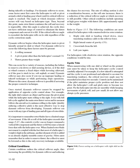Dynamic rollover cannot be stopped by application of opposite cyclic control alone. For example, if the right skid contacts an object and becomes the pivot point while the helicopter starts rolling right, even with full left cyclic applied, the main rotor thrust vector follows the aircraft as it continues rolling. Quickly reducing collective pitch is the most effective way to stop dynamic rollover from developing. Rotor blades have a limited range of movement — if tilt or roll exceeds that range (5 to 8 degrees), the controls can no longer command a vertical lift component and the thrust becomes a lateral force that rolls the helicopter over. Pilots must remember that in order to remove thrust, the collective must be lowered — this is the only recovery technique available.